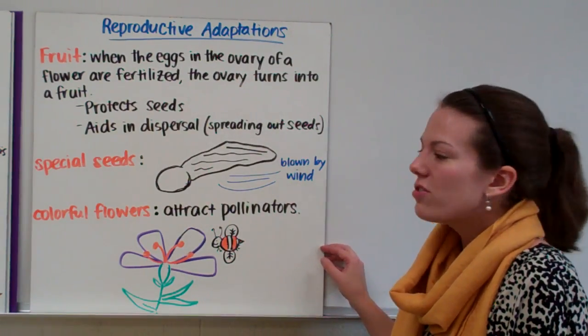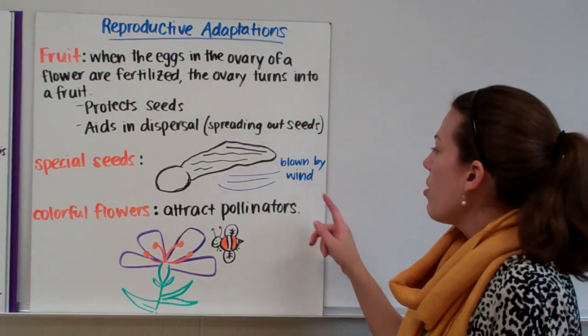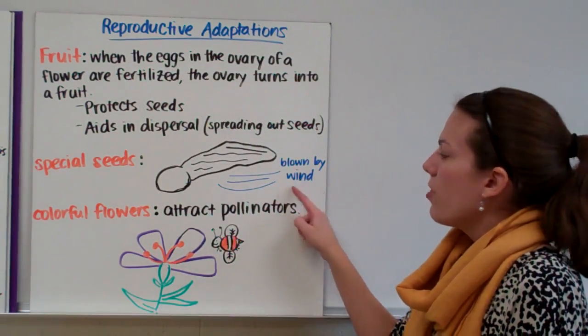Now let's look at one special seed. If you've ever noticed seeds that kind of twirl down like a helicopter, those seeds are spread around by the wind.